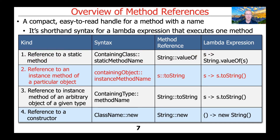The second type of method reference is a reference to an instance method of a particular object — one that has a name. The general syntax for this would be the containing object::instanceMethodName, as opposed to a static method name. An example might be a situation where we would have the variable s::toString. If we were trying to represent this in Lambda expression syntax, it would be s -> s.toString().